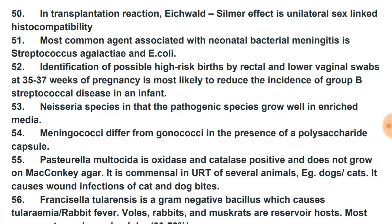The most common agent associated with neonatal bacterial meningitis is Streptococcus agalactiae and E. coli. Identification of possible high-risk births by rectal and lower vaginal swabs at 35 to 37 weeks of pregnancy is most likely to reduce the incidence of group B streptococcal disease in an infant.